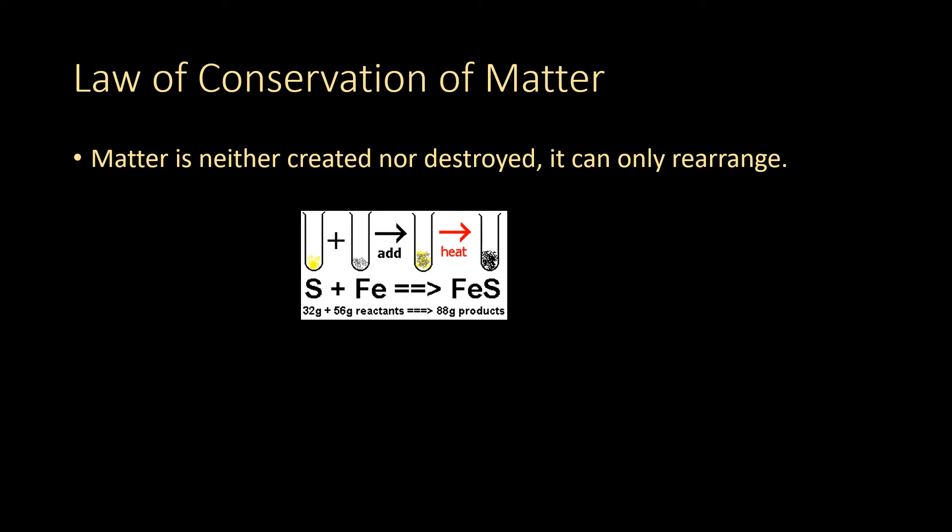Okay, so the law of conservation of matter tells us that matter is neither created nor destroyed, it only rearranges. So if I start with it, I have to end with it. It doesn't just magically disappear or appear. So in this case, if I start with 32 grams of sulfur and 56 grams of iron, then I'm going to have to wind up, if the reaction goes complete, with 88 grams of iron and sulfur. So my product will yield 88 grams.